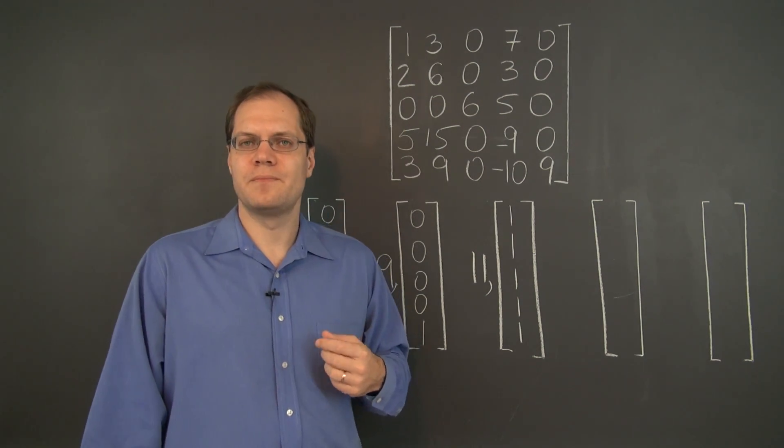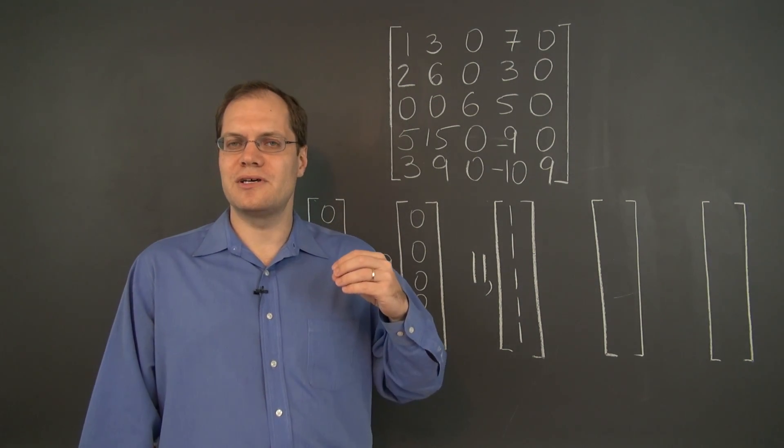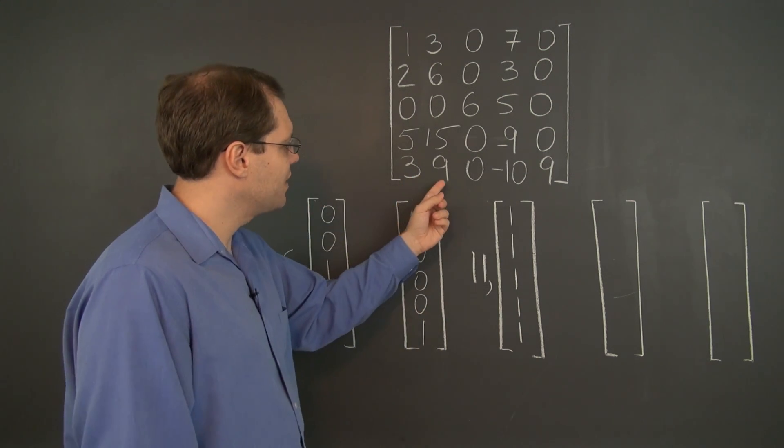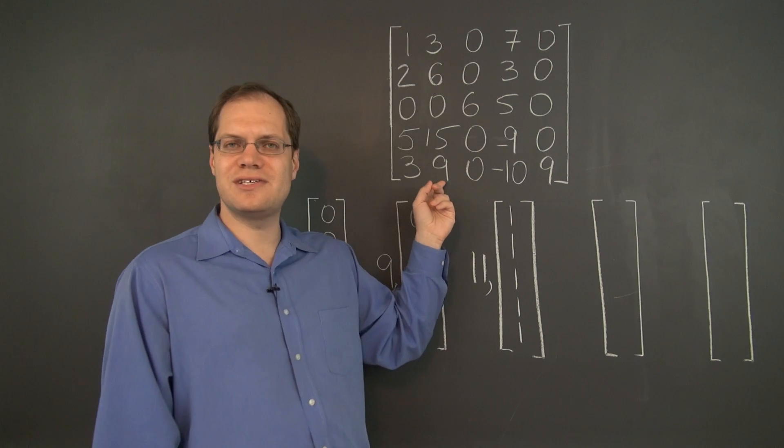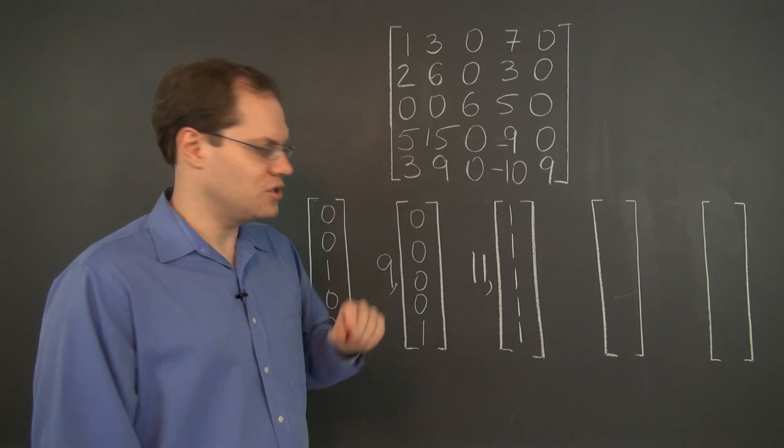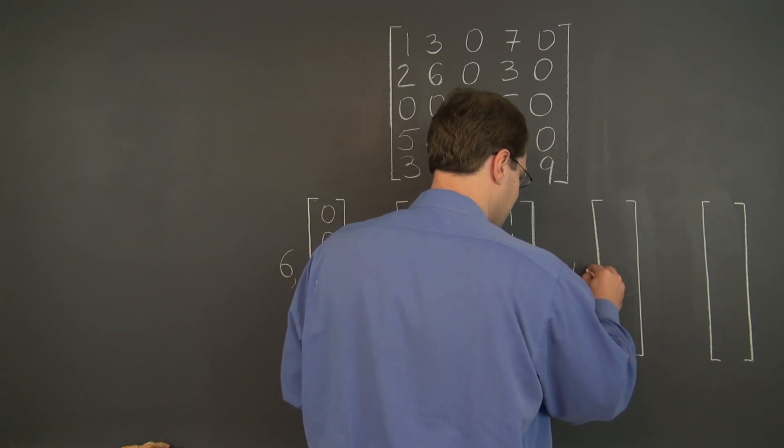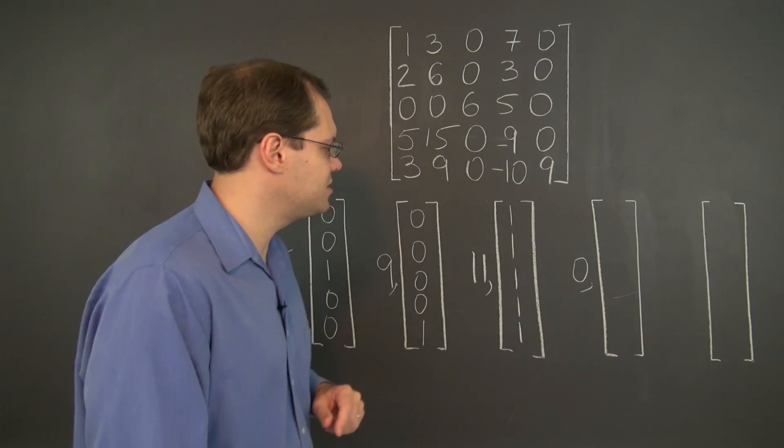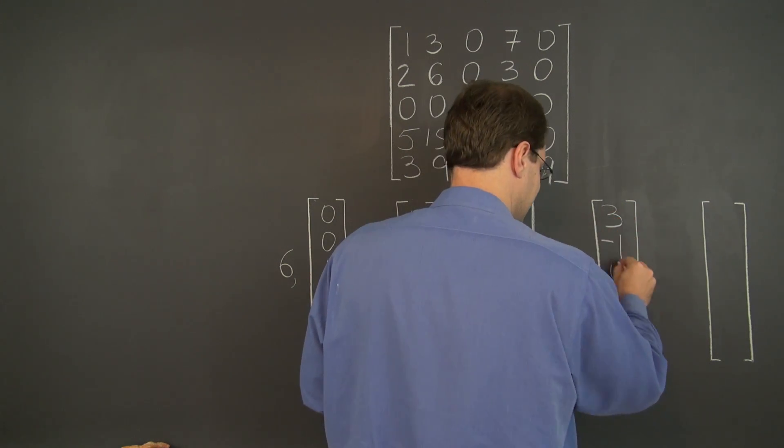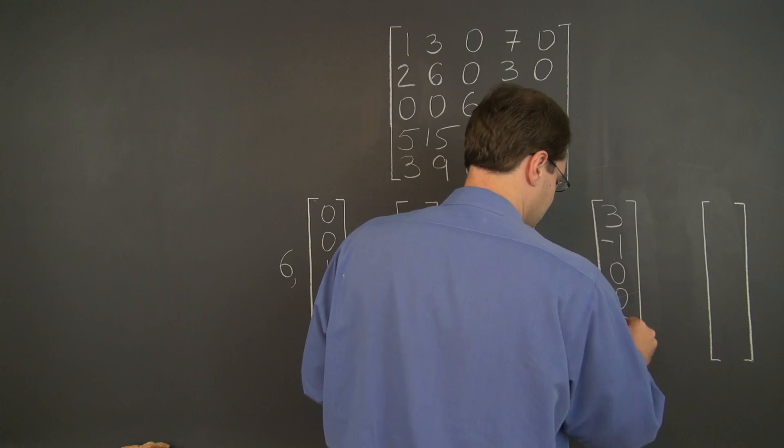So what's another one? The other one comes from the null space kind of relationship among the columns and I made it relatively easy to see. The second column is 3 times the first. So we have an element in the null space, the corresponding eigenvalue is 0 and the corresponding eigenvector is 3, negative 1, 0, 0, 0.